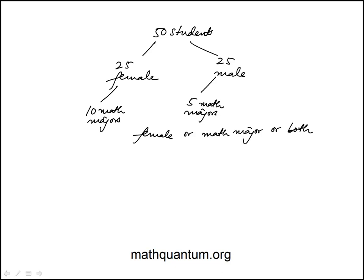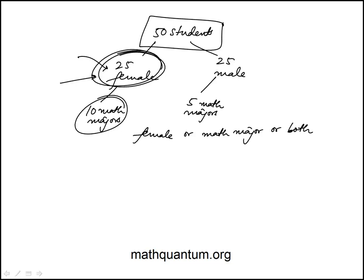There's 25 females and this is already included here. So out of 50, that would be the numbers that would come from here. We need our math majors - there's 5 more here. So this would be a total of 30. 30 people would satisfy this condition: female, math major, or both.